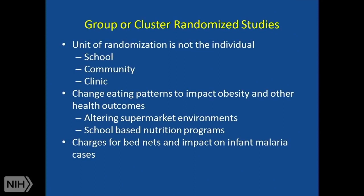Group or cluster randomized studies have a unit of randomization that's not the individual. Normally we randomize the individuals in the study. But if I want to randomize an entire school and give all the kids in that school an intervention, or vaccinate everybody in a community, or change practice within a clinic and then observe what happens to the individuals or providers, then my unit of randomization is the school, the community, or the clinic — not the individuals inside it. This is important because sometimes you're trying to make a change where you can't give pamphlets to one person versus another if they're all in the same waiting room, or it's very hard for providers to change treatment across different people in an open study.